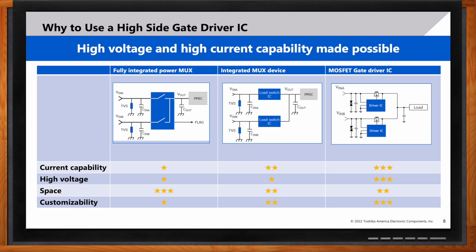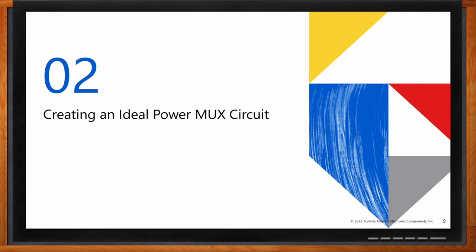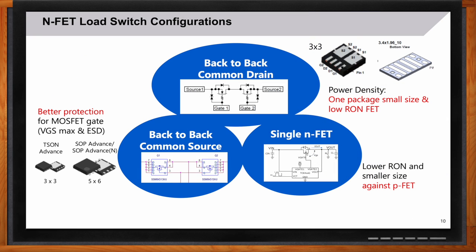Let's discuss how to build a power OR-ing circuit and what specific MOSFET would be required. A critical part of a power muxing circuit is your MOSFET. We can think of three configurations: a single N-channel FET, a back-to-back common drain, and a back-to-back common source. The N-channel FET has a higher power density compared to P-channel, and N-channel has a lot more variety in voltage offerings than P-channel.